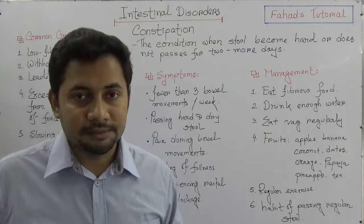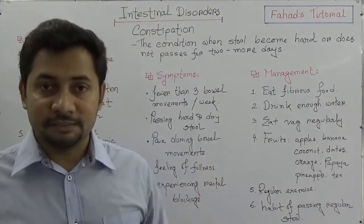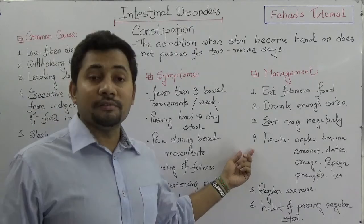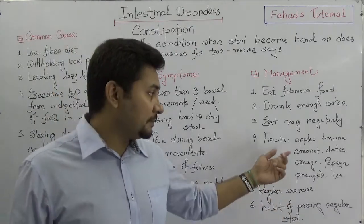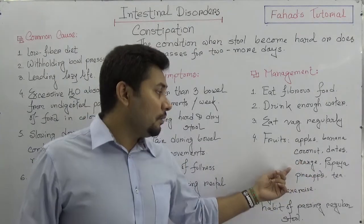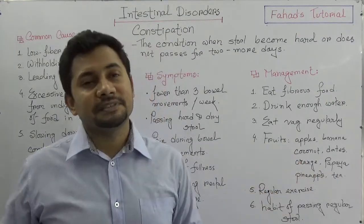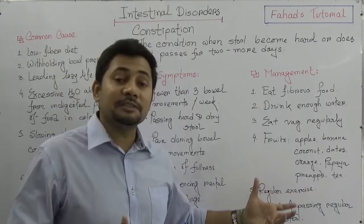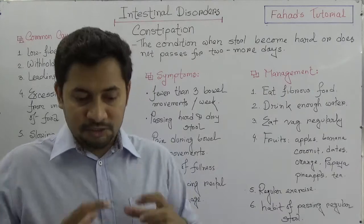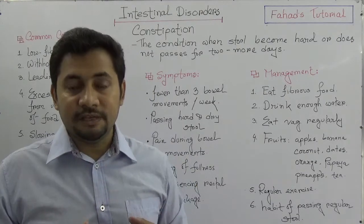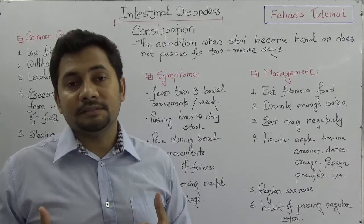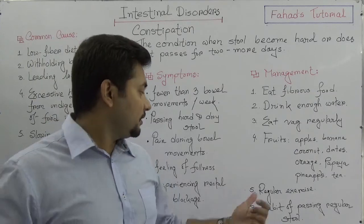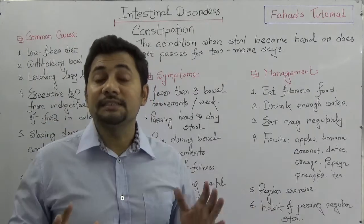Third, take good vegetables every day. Fourth, eat fruits like apples, bananas, coconuts, dates, oranges, papayas, and pineapples. These are all fibrous foods that help soften the stool, making it smoother and relieving constipation. Fifth is regular exercise, which is another key point for living a healthy life.